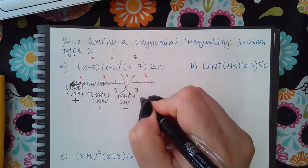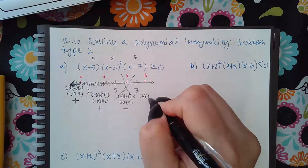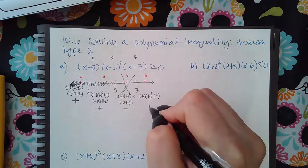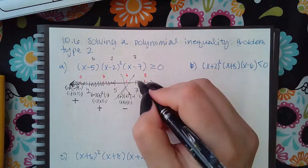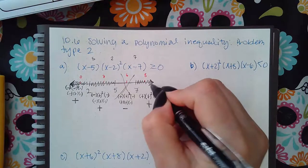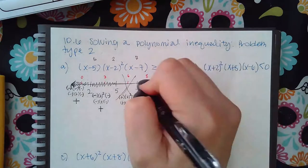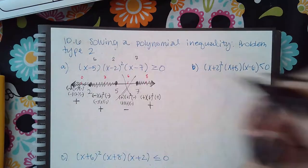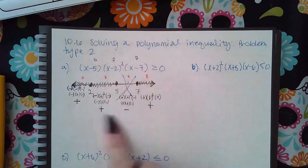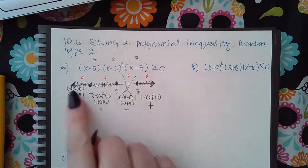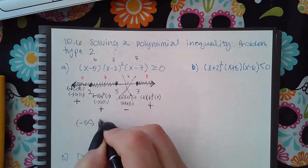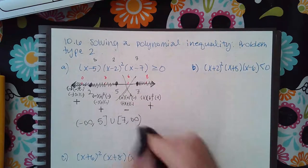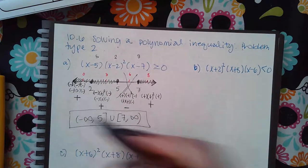Now testing 8: 8 minus 5 is positive, 8 minus 2 is positive squared, and 8 minus 7 is positive — all positives — so this will be positive and this interval will be part of my solution. Since it does have an equal sign, there will be solid dots at all these x-values. Just like in problem type 1, this gives a seamless interval from negative infinity to 5, and then from 7 to infinity.